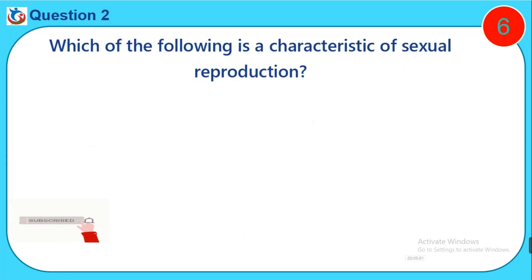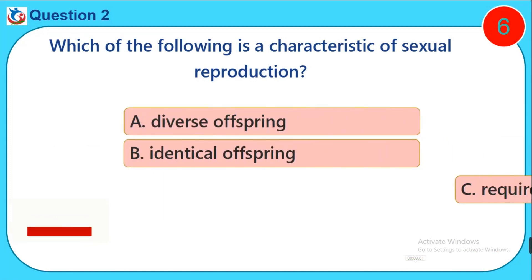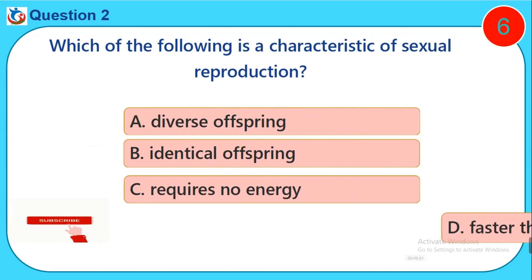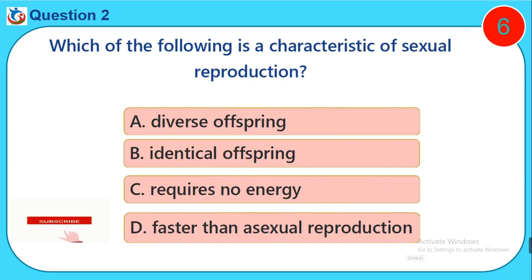Question two: Which of the following is a characteristic of sexual reproduction? A) Diverse offspring, B) Identical offspring, C) Requires no energy, D) Faster than asexual reproduction.